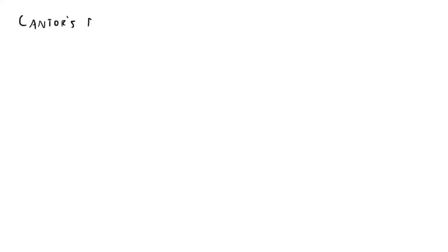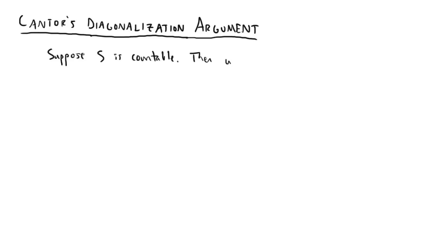And we want to prove that S is uncountable. To do this, we'll use something called Cantor's diagonalization argument, and suppose that S is countable. That is, we can order its elements in some fashion. It doesn't really matter what the ordering is, so we'll just write down an example.